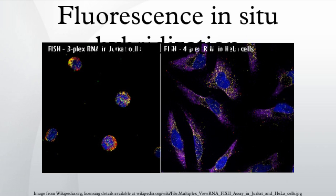Probes are often derived from fragments of DNA that were isolated, purified, and amplified for use in the human genome project. The size of the human genome is so large compared to the length that could be sequenced directly, that it was necessary to divide the genome into fragments. To preserve the fragments with their individual DNA sequences, the fragments were added into a system of continually replicating bacteria populations.